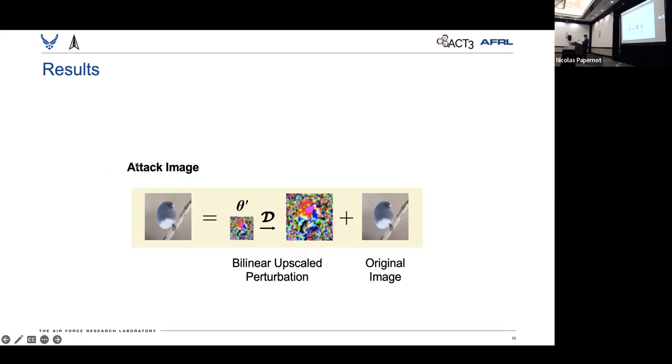And basically, we'll have a dimension-reduced version of theta, we'll call it theta prime, and then we'll bilinearly upscale that to the actual perturbation, which can then be applied to the original image.